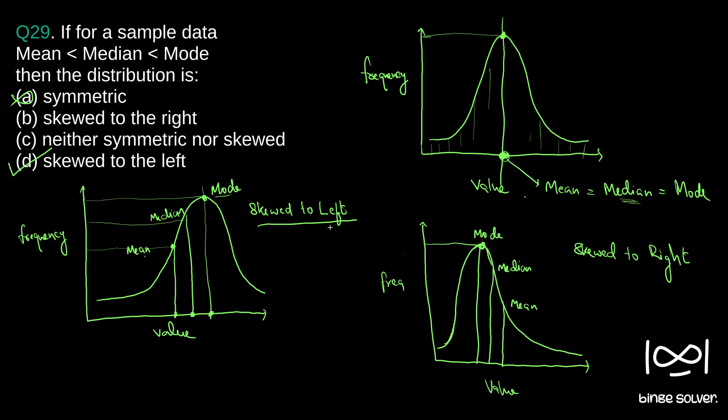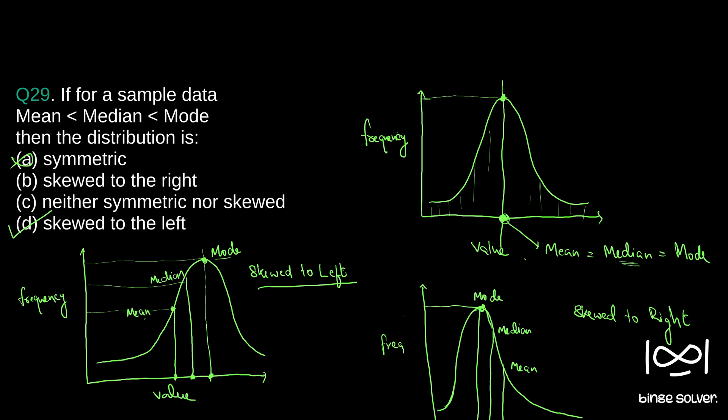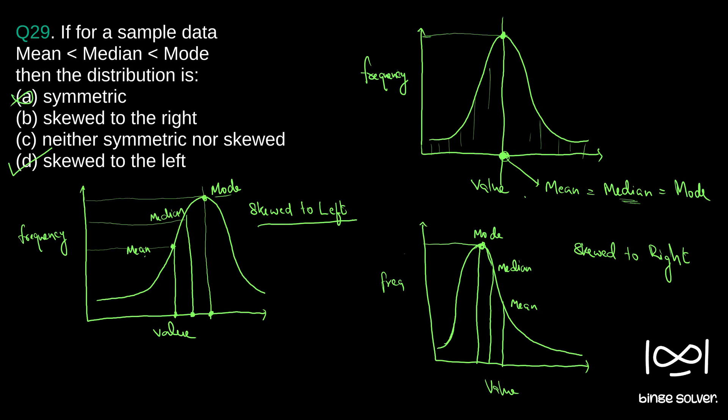If you are not familiar with the concepts of mean, median, mode, and skewness, these are terms usually studied in statistics and this will be a very difficult question. Such questions rarely appear in CSAT, so you don't have to worry and study all of statistics. If you can skip this question, there will be plenty of other questions to help you clear the exam. The solution to question 29 is D — skewed to the left.